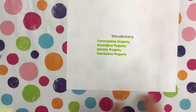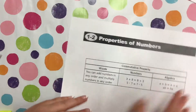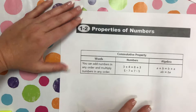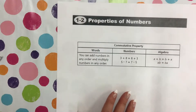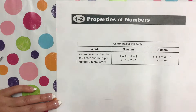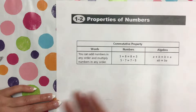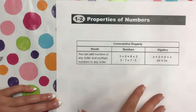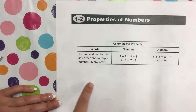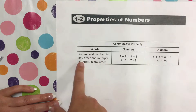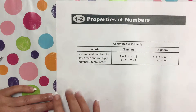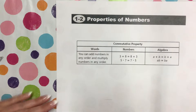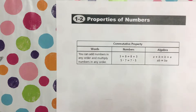Let's start with the first one: the commutative property. What that basically is, it's kind of like a rule, and what that rule states is that you can add numbers in any order — and also not just addition, but you can multiply numbers in any order — and you get the same result.